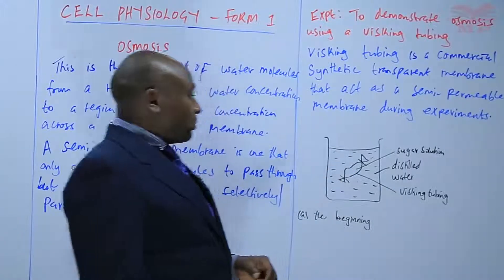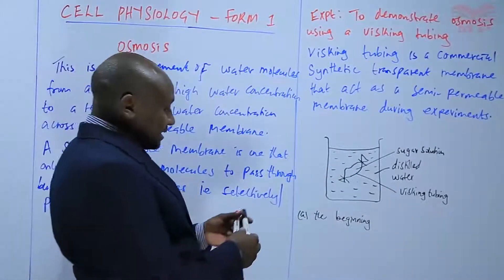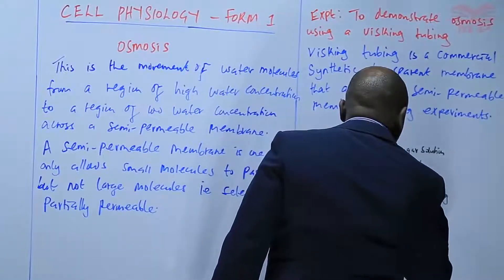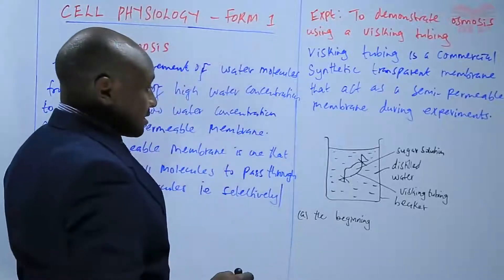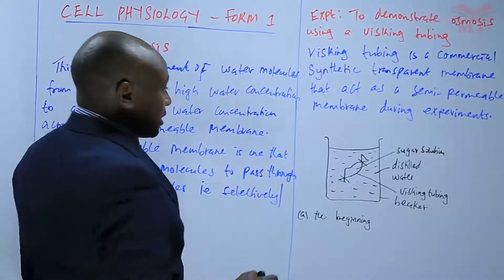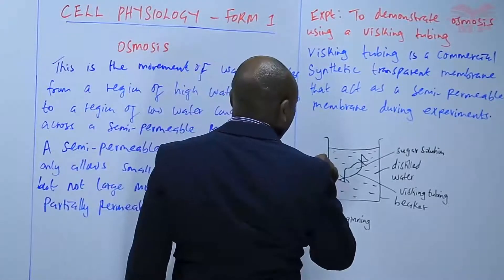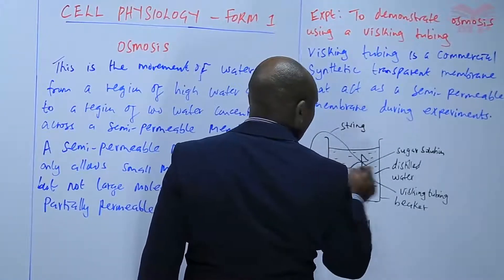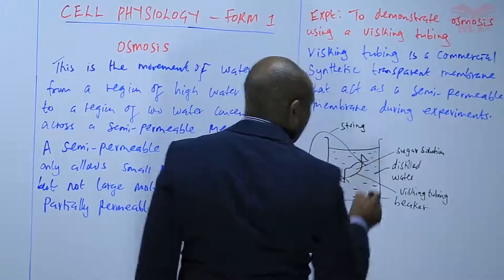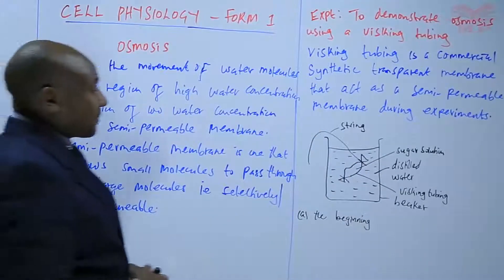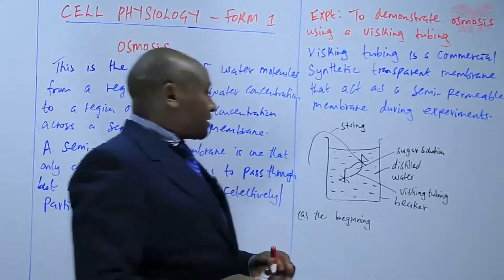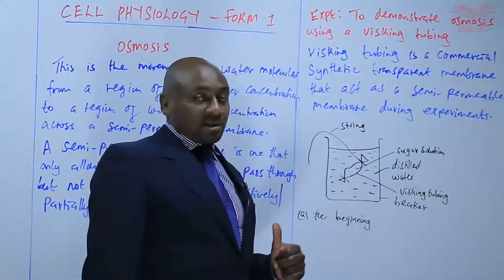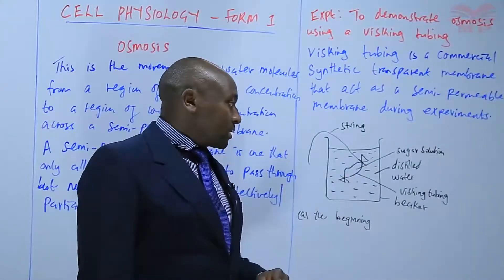Then we take that visking tubing and immerse it into a beaker that contains distilled water. We can hang it using a string inside the distilled water, and then we leave the setup for about 30 minutes.